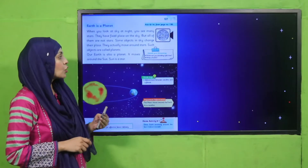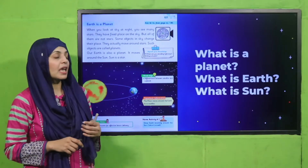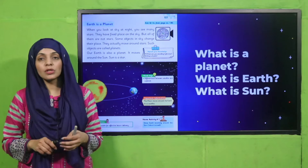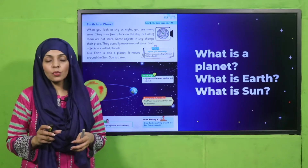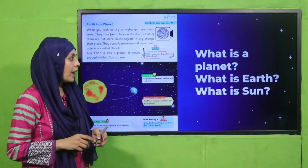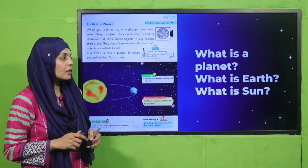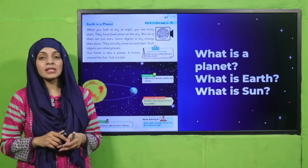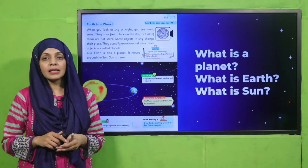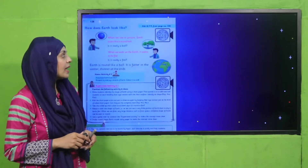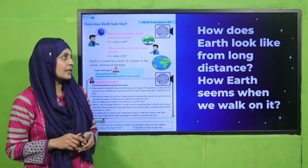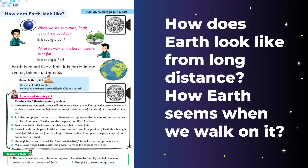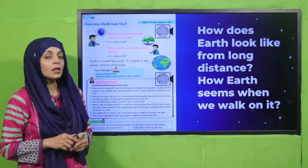My dear students, in the first lecture we studied: what is a planet? A planet is an object which is revolving around a star. What is earth? Earth is a planet. What is the sun? The sun is a star.